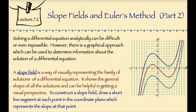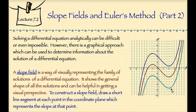To construct a slope field, draw a short line segment at each point in the coordinate plane which represents the slope at that point. In this slope field, you can see the short line segments have been drawn at each point in the coordinate plane representing the slopes at those points. All of these short line segments together depict the general shape of the solution curves of the differential equation. The three curves drawn here represent three particular solutions of that differential equation.